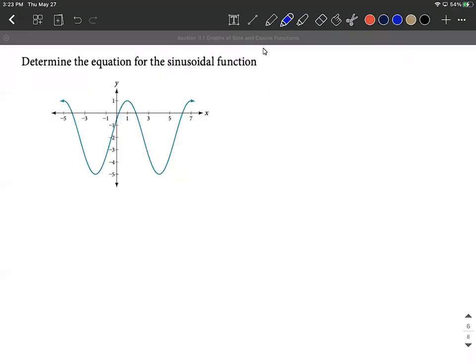Alright, we are tasked with finding the equation of a sinusoidal function. So we're given a graph. We want to find what function produces this graph. So when I get going on these, we can choose either sine or cosine.